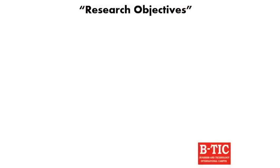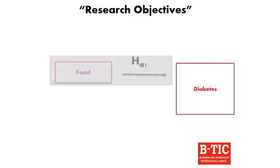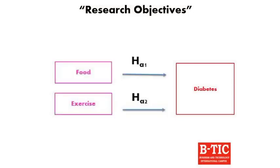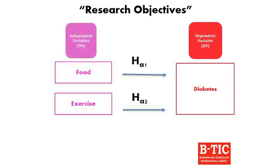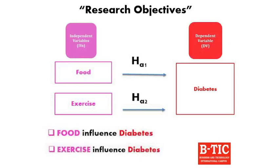It is easy for us to develop research objectives if you know the conceptual framework very clearly. Taking our usual example — diabetes, food, and exercise — diabetes is the dependent variable (DV), food and exercise are the independent variables (IVs). In this conceptual framework we have two hypotheses: number one, food influences blood sugar; number two, exercise influences blood sugar.